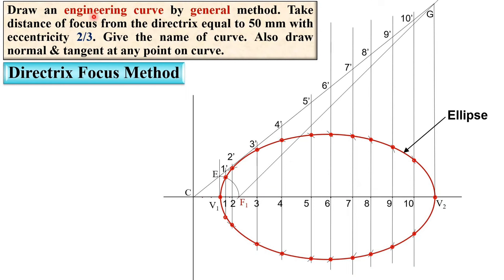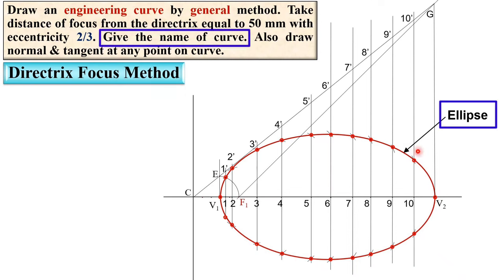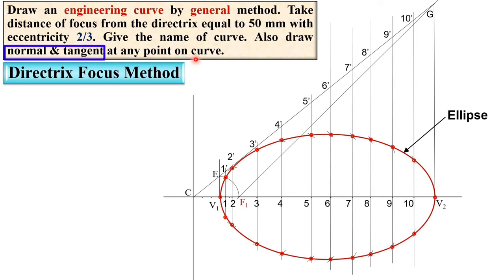This is your first answer — the engineering curve. The second answer: the name of the curve is ellipse. Now for the last objective, normal and tangent. It is given at any point on the curve, so assume any point S on the ellipse where you want to draw the normal and tangent.